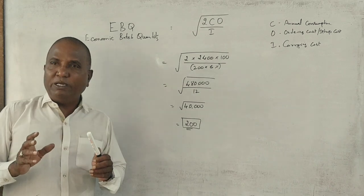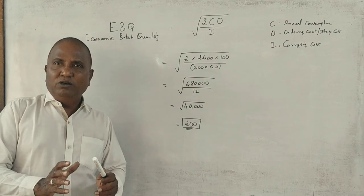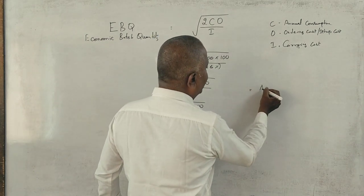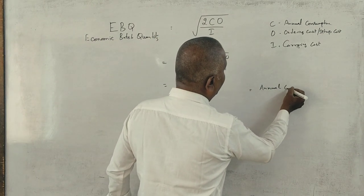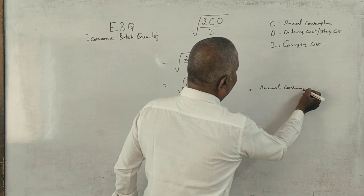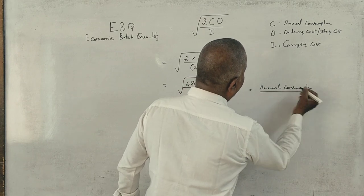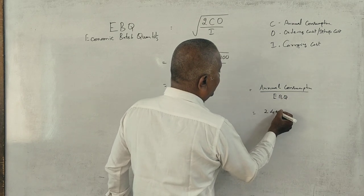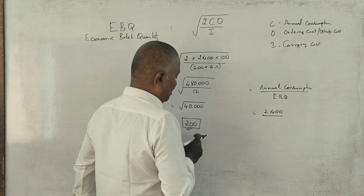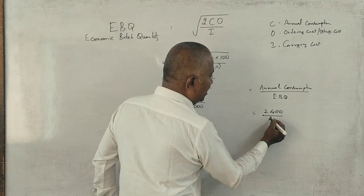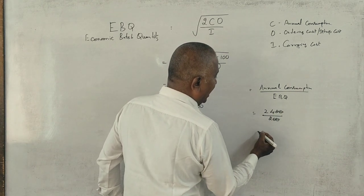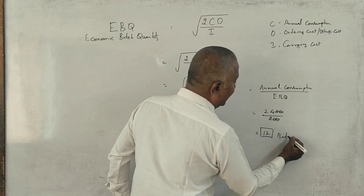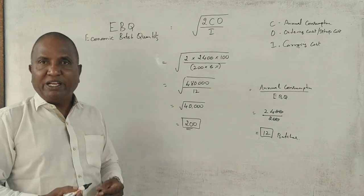How many batches to be manufactured in a year? Annual consumption divided by EBQ. Annual consumption is 2400 and EBQ is 200. So we have 12 batches. We have 12 batches to manufacture.